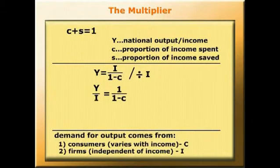Now this is true for levels of national income. It'll be true for changes also. So we can say the change in Y over the change in I is equal to 1 over 1 minus c.